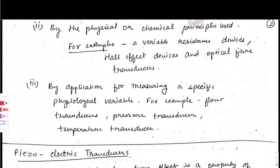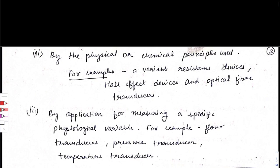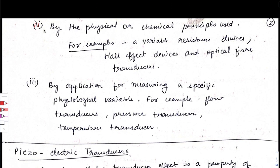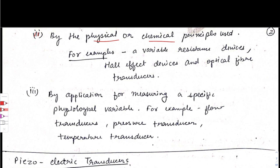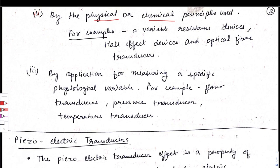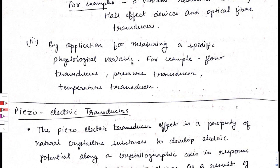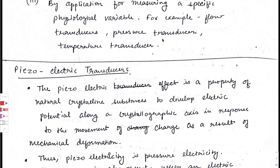We have now covered active and passive transducers as the first classification. The second classification is by physical or chemical principles used — for example, variable resistance devices, optical fiber transducers. The third classification is by application for measuring a specific variable, such as flow transducer, pressure transducer, or temperature transducer.